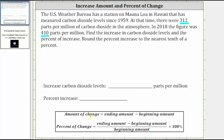To find the amount of change, we take the ending amount and subtract the beginning amount — or the new amount minus the old amount. If this difference is positive, we have an increase. If it's negative, we have a decrease.